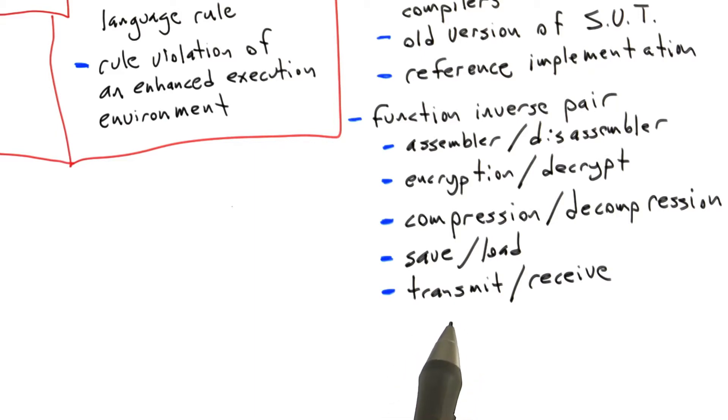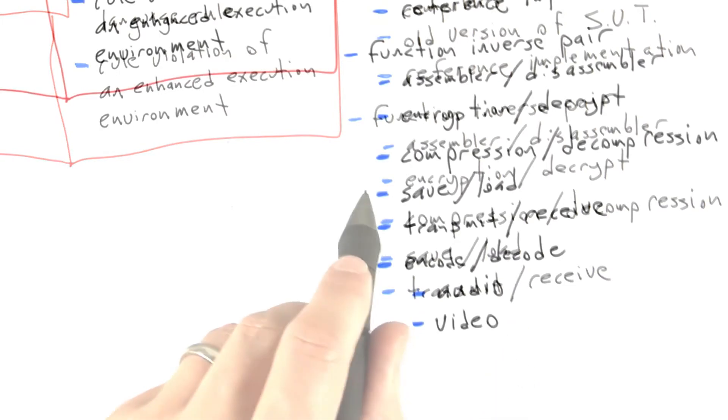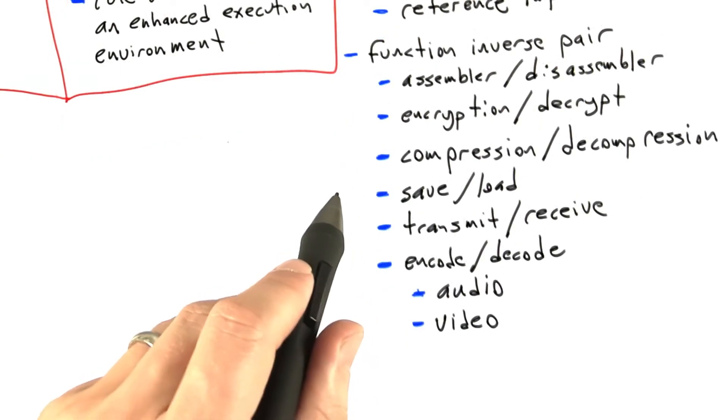And finally, encoding and decoding of, for example, media formats, serves as a final example of a function inverse pair. And I know there must be a bunch of these that I'm missing, but these are the ones I could come up with just sitting down and brainstorming for a couple of minutes.